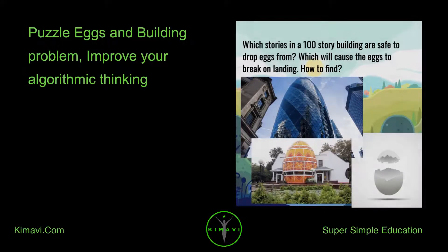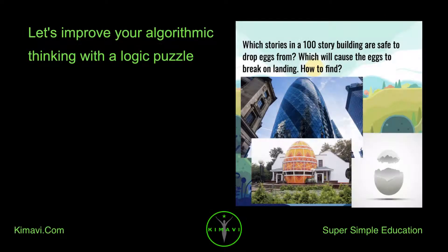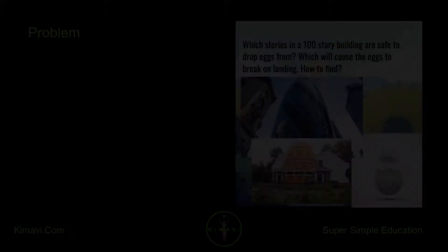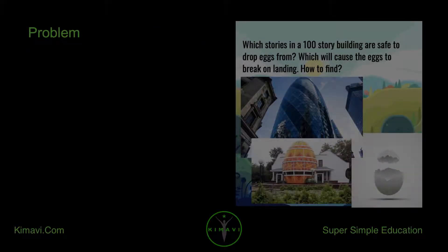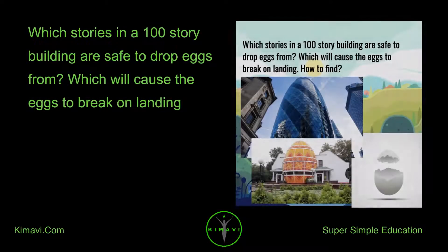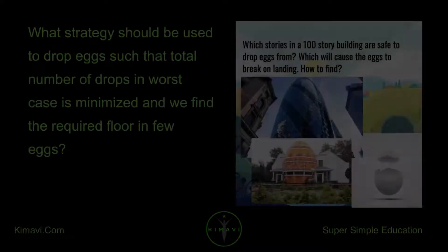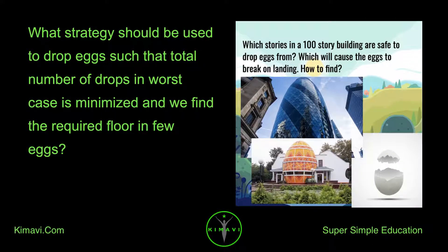Puzzle Eggs and Building Problem: Improve Your Algorithmic Thinking. Let's improve your algorithmic thinking with a logic puzzle. Which stories in a 100-story building are safe to drop eggs from? Which will cause the eggs to break on landing? What strategy should be used to drop eggs such that the total number of drops in the worst case is minimized, and we find the required floor in as few eggs as possible?